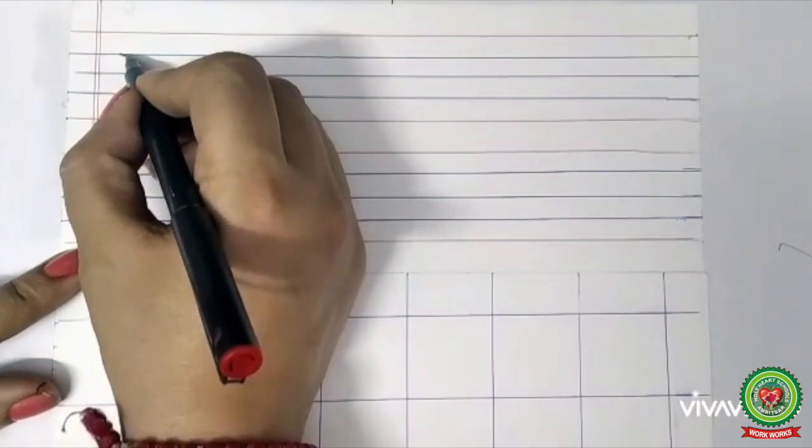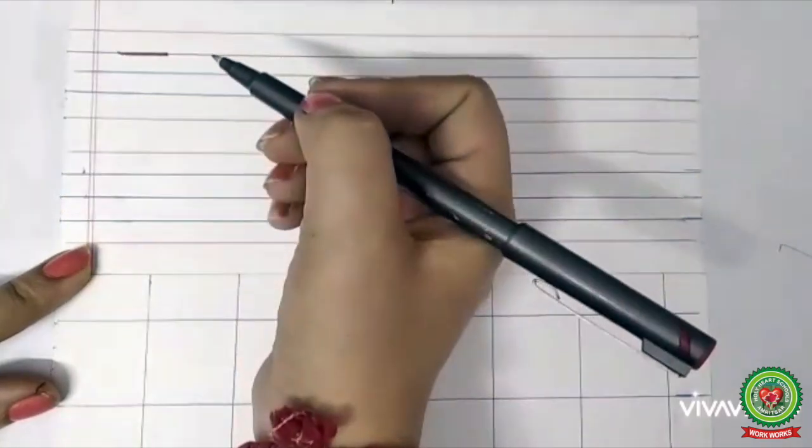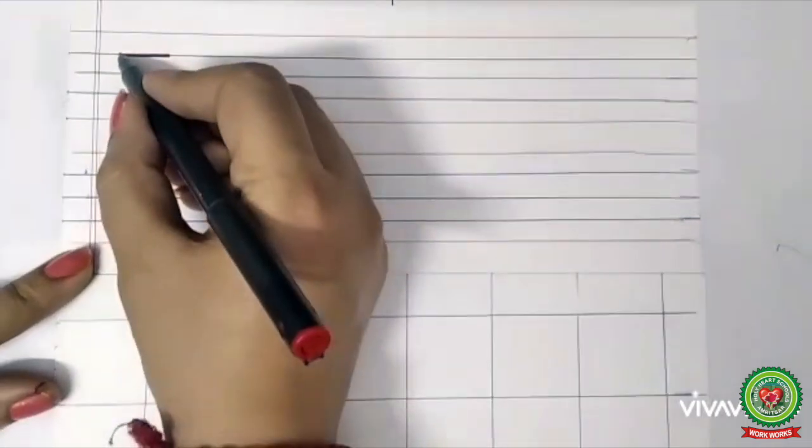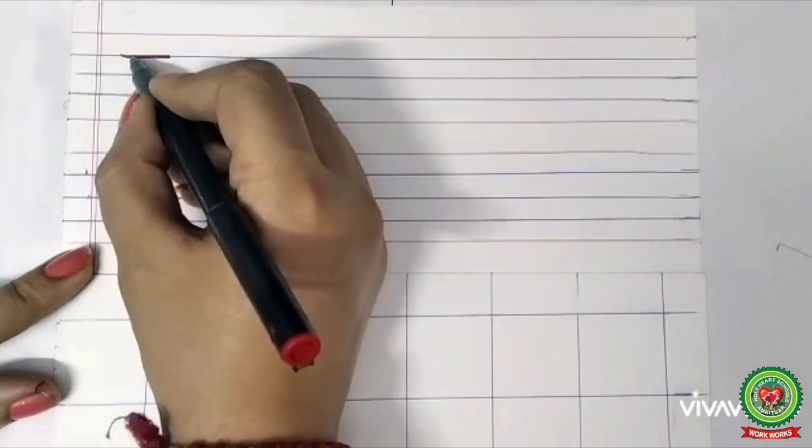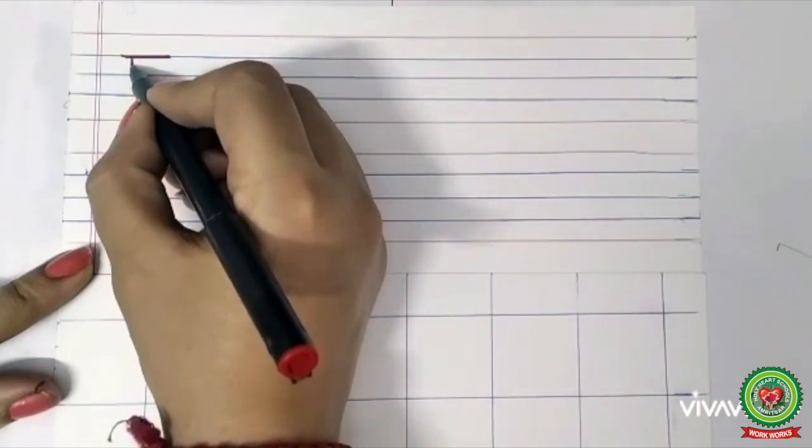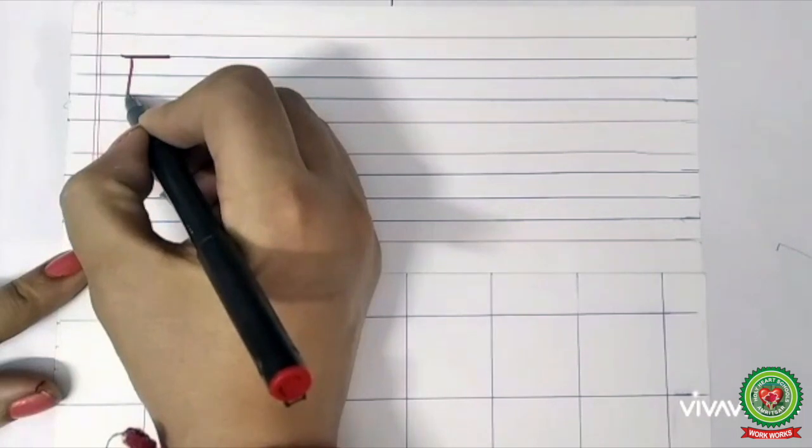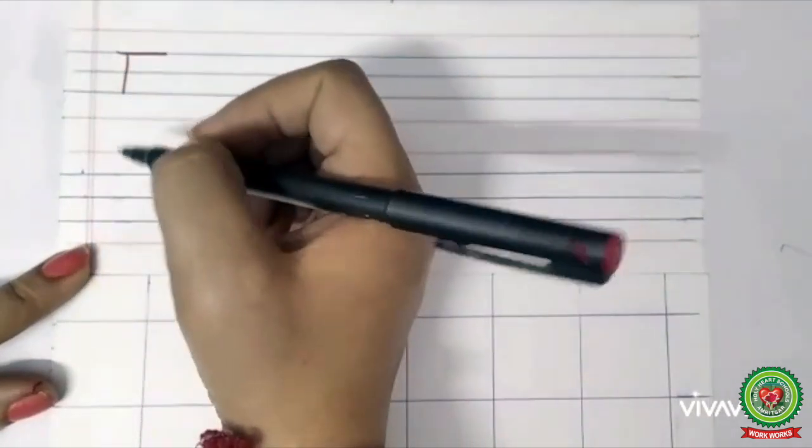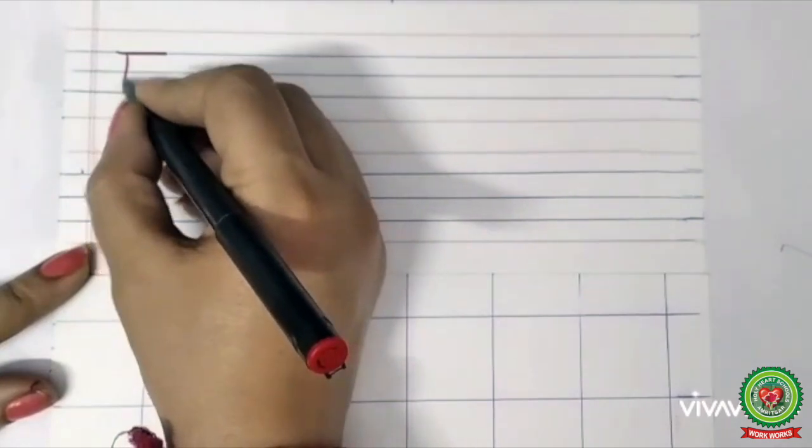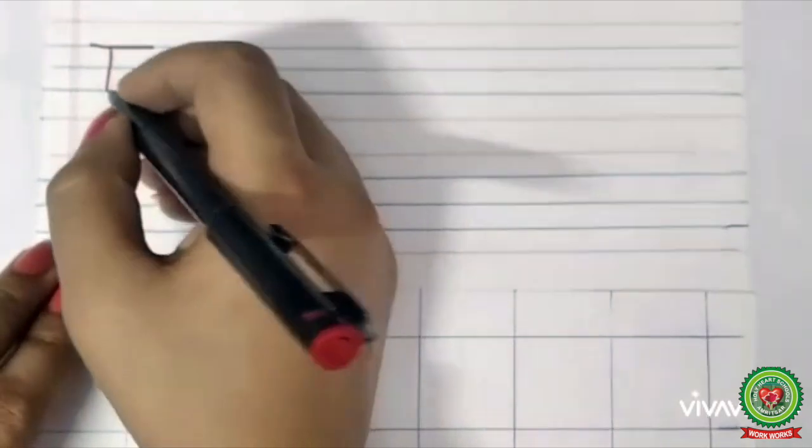Then after leaving some gap, I will draw a standing line from there. And this turning line must touch the fourth line - first, second, third, and fourth.